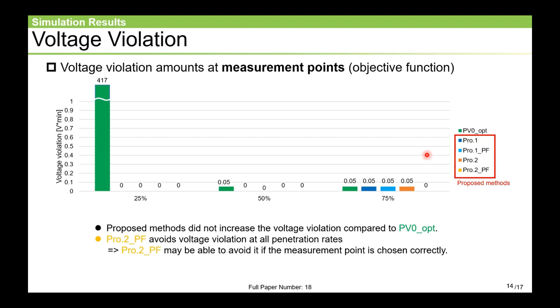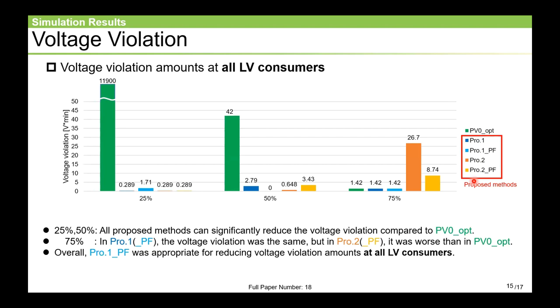Next, let's discuss the result of voltage violations. This graph shows the result of voltage violation at measurement points, which is objective function. The results are colored for each method. First of all, you will notice that both the proposed methods did not increase voltage violation compared to PV0opt. And especially, PRO2_PF avoided voltage violation at all rates. This means that the PRO2_PF can completely avoid voltage violations if the measurement points are properly selected.